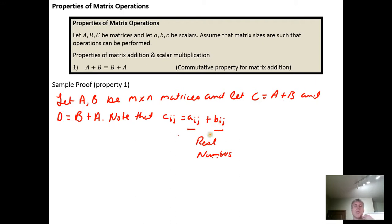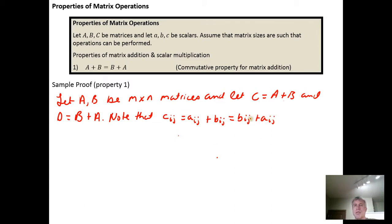Because they're real numbers, and real number addition is commutative — just like three plus two — a sub i j plus b sub i j can be commuted so that it becomes b sub i j plus a sub i j. When we see this, we notice that this is exactly what the i j-th element in matrix D looks like: the i j-th element in matrix D comes from b sub i j plus a sub i j. So by the transitive property of equality, c sub i j equals d sub i j.